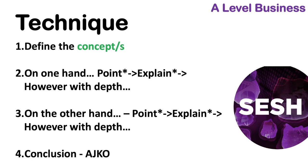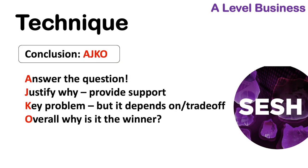Now let's look at AJKO. In terms of an AJKO, here's how you could do your conclusion. Answer the question - which one are you going for, or what's the actual impact? Then justify why, provide support from the context. Then you might want to show some balance, some counterbalance. So what is the key problem? Or what is the key flaw with the way you've gone?